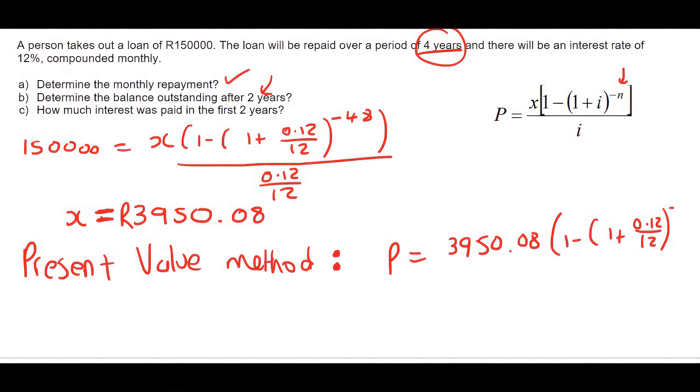That's going to be two years, which is going to be 24. And that gives us 83,913.08. So that is how much money this person still owes after two years.